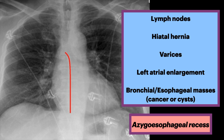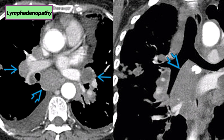In terms of pathology here, the differential includes abnormal lymph nodes, hiatal hernia, varices, left atrial enlargement, and bronchial or esophageal masses. Let's get started.